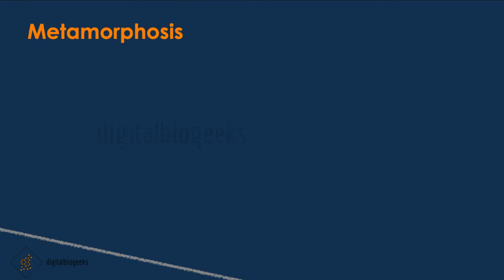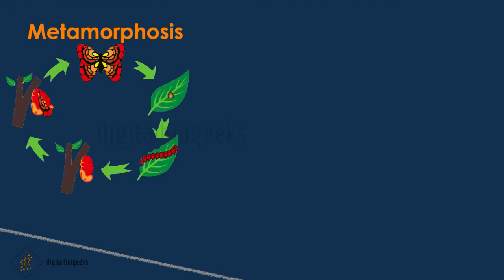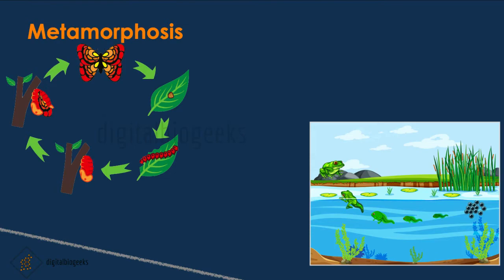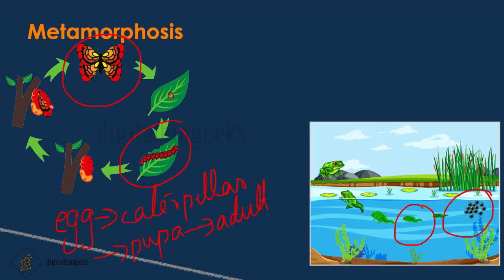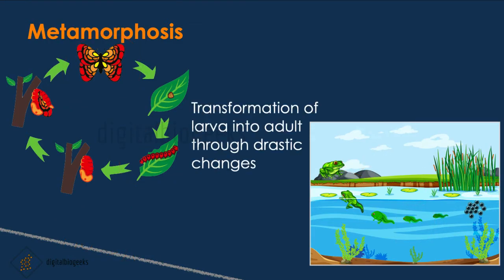After an individual is born, they continue to grow. A caterpillar is completely different from the butterfly, and likewise a tadpole is completely different from the frog. In the case of silkworms, first eggs are formed, which develop into a caterpillar, then to a pupa, and then to an adult. Similarly, in the case of a frog, from the egg a tadpole develops, and this tadpole finally develops into a frog. The transformation of a larva into an adult through drastic changes is called metamorphosis.